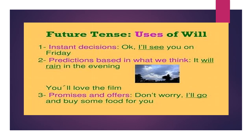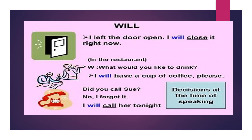Number three, we use 'will' for promises and offers. For example, when I tell you 'Don't worry, I'll go and buy some food for you' — so I promise or offer you something. I use 'will.'